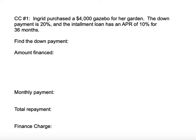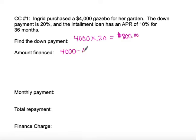Now try the practice problem: Ingrid purchased a $4,000 gazebo for her garden. The down payment is 20% and the installment loan has an APR of 10% for 36 months with monthly payments. First, calculate the down payment: $4,000 × 20% = $800. The amount financed is $4,000 − $800 = $3,200, which is our principal P.